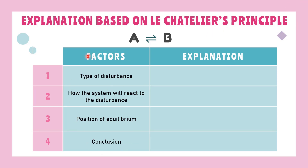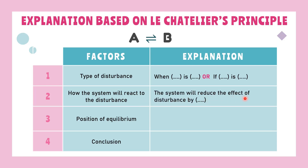Here are some guides to explain Le Chatelier's Principle. First, we need to emphasize the type of disturbance involved. For example, if we want to talk about concentrations, the disturbance can be either increased or decreased. The second point will counteract the first point — if the disturbance is increased, the system will reduce the effect of disturbance by decreasing that factor.